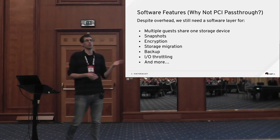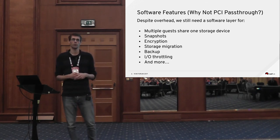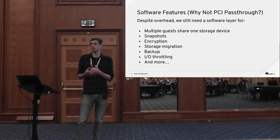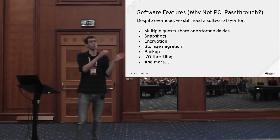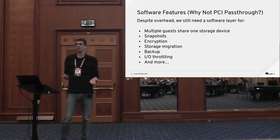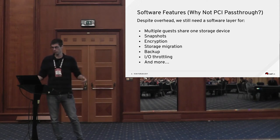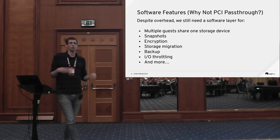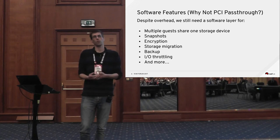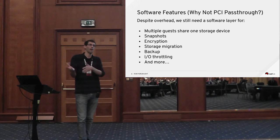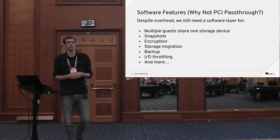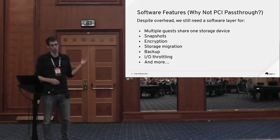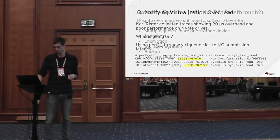The end game is obviously PCI pass-through, which gets rid of the software layer. The problem is the software layer offers a lot of features: the ability to split a device and share it between multiple VMs, snapshots, encryption, IO throttling, backup, storage migration. For general purpose virtualization you probably still want those features. If performance is your number one priority you might decide to do pass-through, but for the general purpose case we still need to be able to use high IOPS devices without dedicating so much hardware.